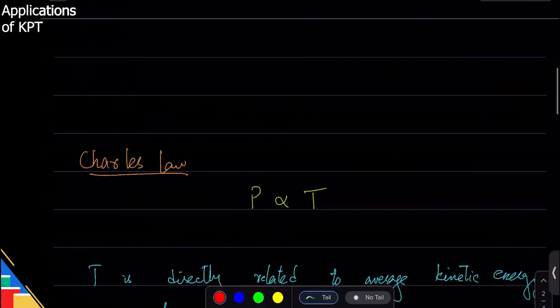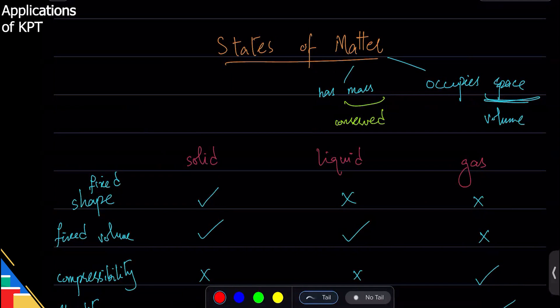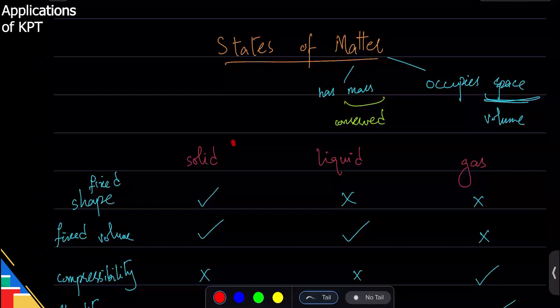Remember in the beginning I told you what matter is: it has mass and it occupies space. The same mass occupies less space in solid and the same mass occupies much higher space in gas.